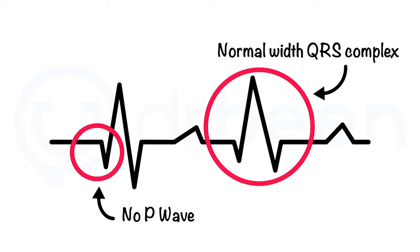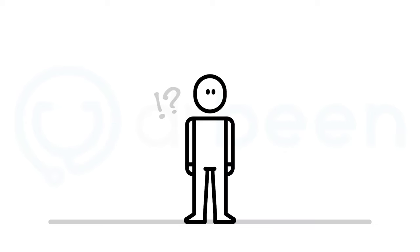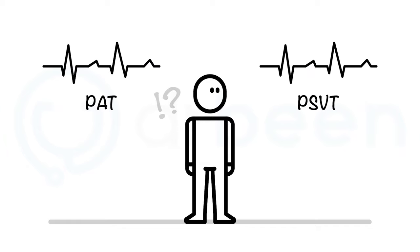PSVT can also occur due to the bundle branch blocks, or BBB. We will discuss this with the bundle branch blocks. We will soon study that paroxysmal atrial tachycardia, or PAT, also looks very similar to the PSVT on the EKG strip.